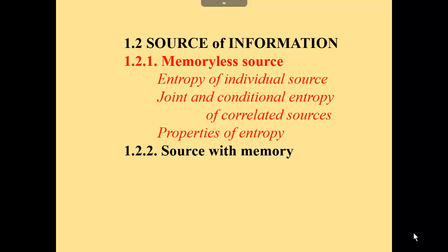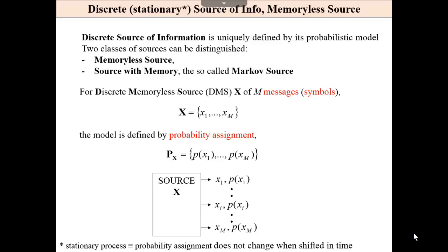However, what do we mean by this term, source of information, in the context of information theory? A discrete memoryless source (DMS) is a source that generates M messages, symbols, letters, and the model is defined by the probability assignment.